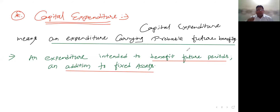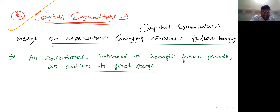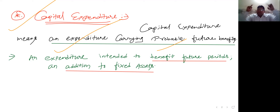The topic is related to capital and revenue expenditure. The very first one we have to see is capital expenditure. What is capital expenditure? Simply remember it: capital expenditure means it's a big expenditure — an expenditure carrying probable future benefits. Which means it will give you future benefits. Like a machine purchase — the machine will give you future benefits, probable future benefits. So that is what capital expenditure is, remember.